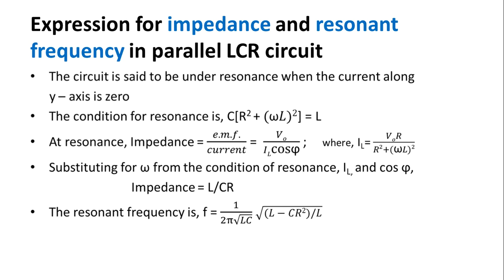We can also get the expression for resonant frequency by substituting ω = 2πf_R into the resonance condition C(R² + (ωL)²) = L. Simplifying, we arrive at: f_R = (1/2π) × √(1/LC) × √((L − CR²)/L), which can be rewritten as f_R = (1/2π) × √(1/LC − R²/L²). This is the expression for resonant frequency. A parallel resonant circuit is known as a rejector circuit.